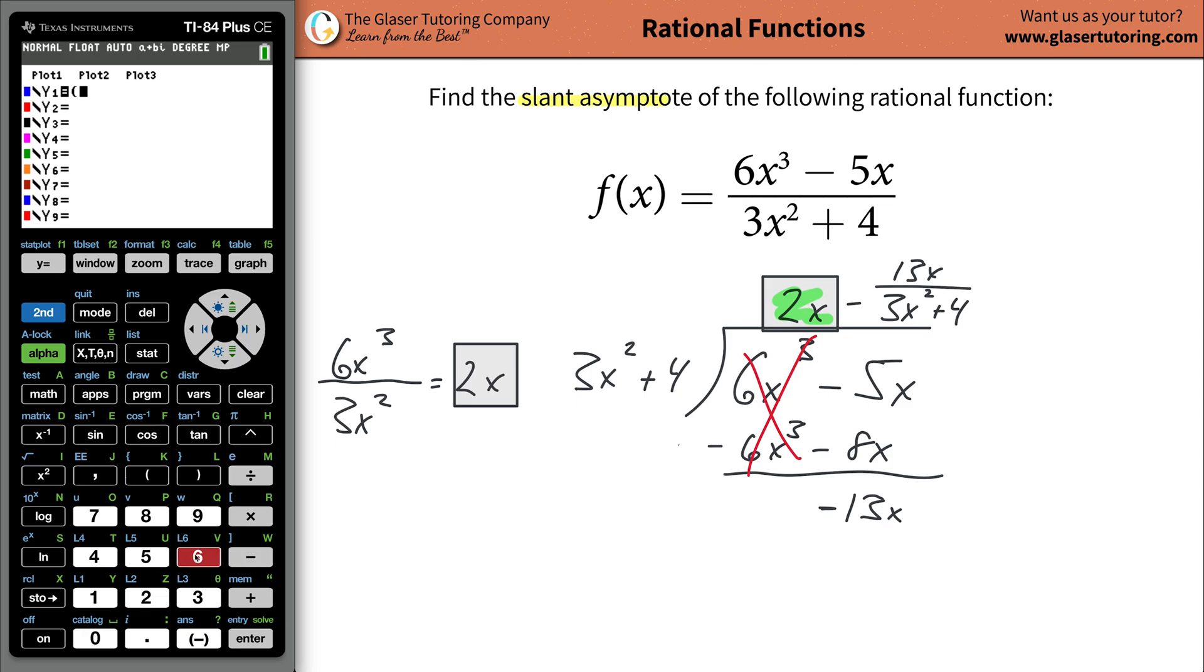So hit open parentheses, do 6x cubed, 6x cubed, and then minus 5x from that. Close parentheses, then divide it. Open the parentheses again. So you're going to have 3x squared plus 4. Alright, close it. Make sure you got parentheses. Otherwise, it's not going to come out right.